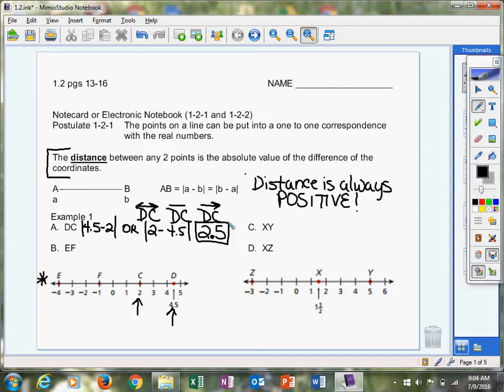That's the length of DC. Let's look at EF. Again, E is at negative 4. F is at negative 1. They're not always going to be integers. They may be mixed numbers or decimals, fractions. It could be any way that they present this to you. You guys have calculators. You can figure it out.